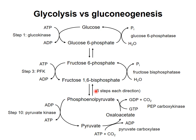The reversible reactions of gluconeogenesis and glycolysis are catalyzed by the same enzymes in each direction. For these reactions, which direction is favored depends on the relative concentration of metabolites. Recall that we saw a similar situation with glycogen synthesis and breakdown.